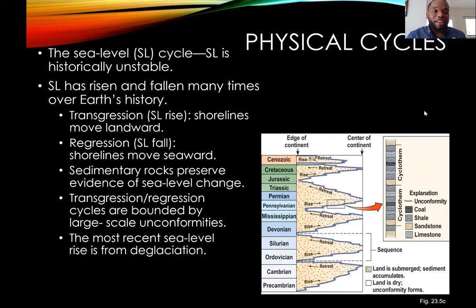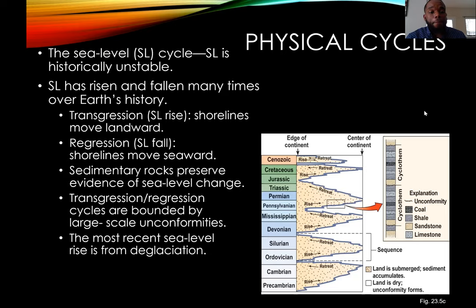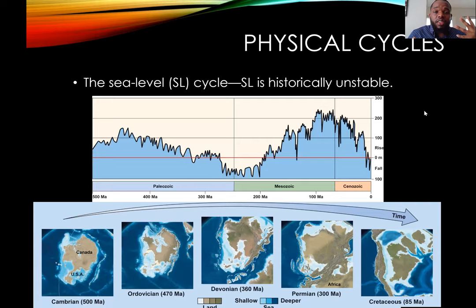We also have sea level cycles. There is a transgressive phase where sea level increases, and then a sea level fall, and this is preserved in sedimentary rock. Sea level is unstable — mountain building events can trigger sea level rise or fall, and so can glaciation and deglaciation events. The position of the continents and how they've been moving around for so many years triggers this instability in sea level, which is extremely important in understanding global change.